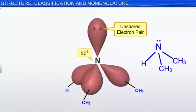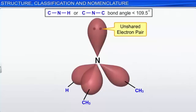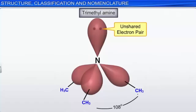Due to the presence of an unshared pair of electrons, the C-N-H or C-N-C bond angle is less than the normal tetrahedral bond angle of 109.5 degrees. For example, the bond angle in trimethyl amine is 108 degrees.